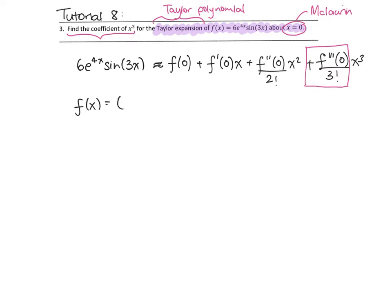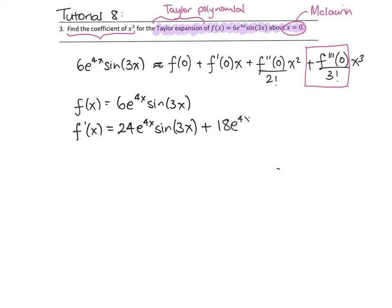So let's start differentiating our function. We've got f of x is 6e to the 4x sine of 3x. The first derivative is going to be 24e to the 4x times sine of 3x plus 18e to the 4x cosine of 3x — don't forget your chain rule. Then I look at this and think, I have to take the second derivative of this, which is going to be the product rule twice. I really don't want to do this. Can we find a different way? The good news is yes, we can.